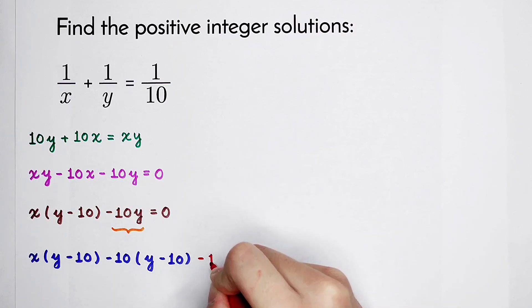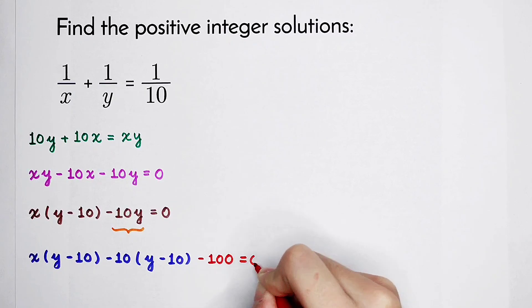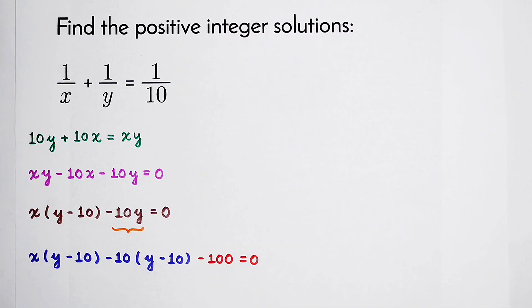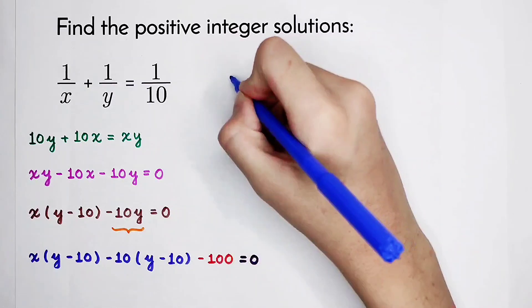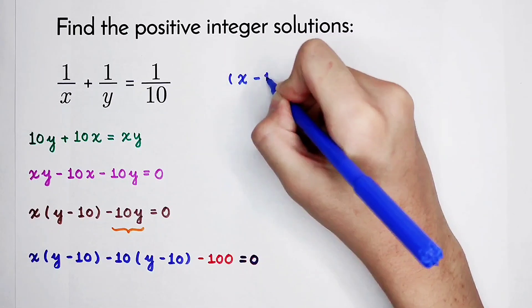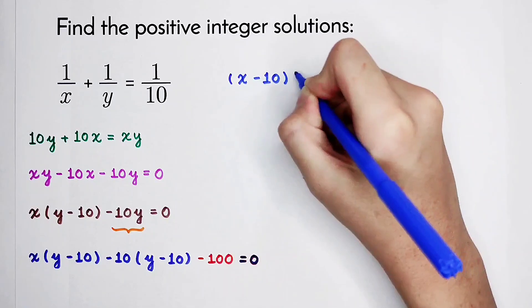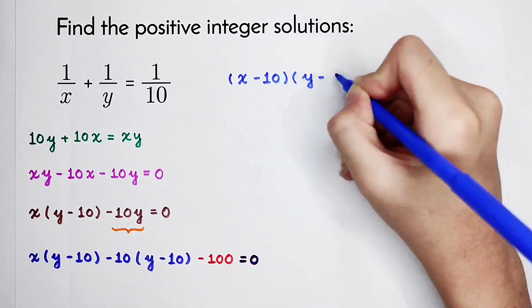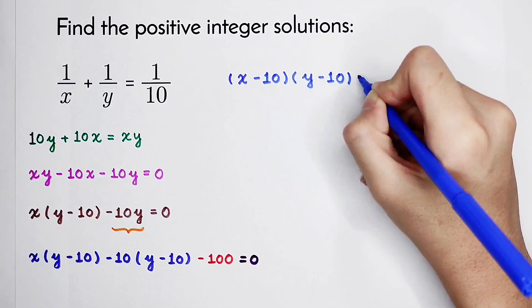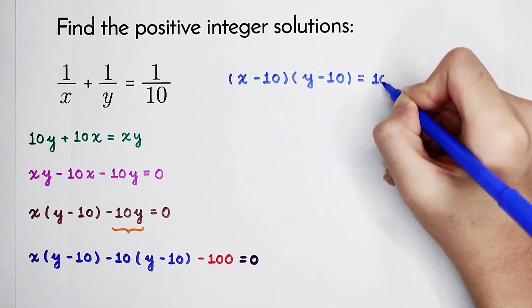So we have to subtract it again. And if we subtract 100, here, y minus 10 can be taken out. We can add 100 on both sides. So here, x minus 10 times y minus 10 is 100.